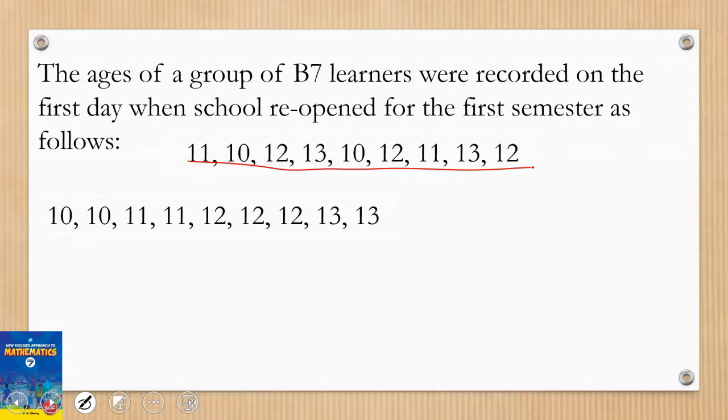Now the arrangement can be done in ascending or descending order - either way will give you the same answer. So arranging them in ascending order as I have here, I can look at it by inspection. I have one, two, three, four. When I come from here, one, two, three, four, this becomes the middle part. So the middle number, the 12, becomes my median. The median for this data is 12, as simple as that.